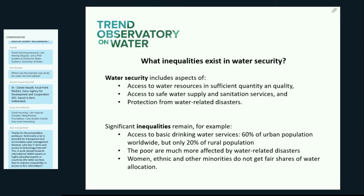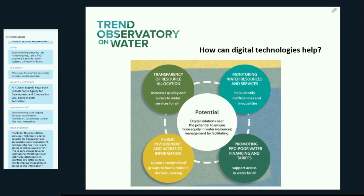The poor are often much more vulnerable to water-related disasters as they tend to live in low-quality housing and in flood-prone or drought-prone regions. And when water resources are allocated — for example for irrigation — women, ethnic and other minorities, and smallholder farmers regularly do not get fair shares of available water resources. How can digital technologies help address these inequalities? We have identified four general approaches: digital technologies can help improve monitoring of water resources and access to WASH services; they can facilitate participation in decision-making and access to information; they can support pro-poor water financing and tariffs; and they can increase transparency in allocation.